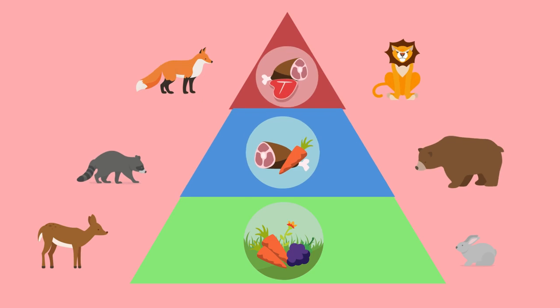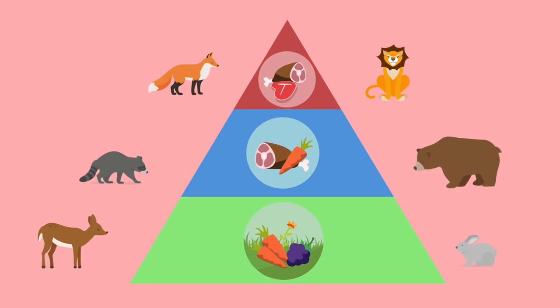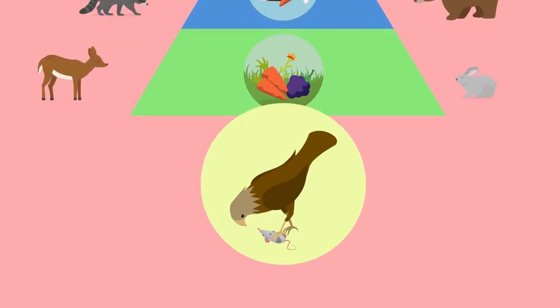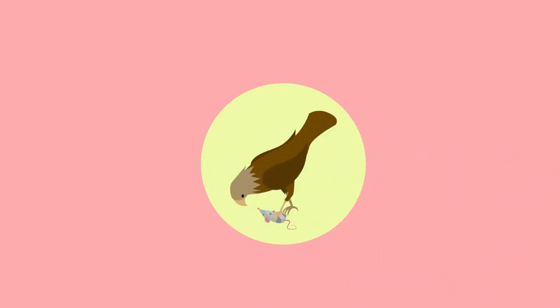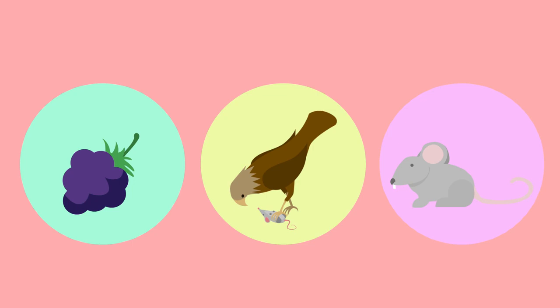Each of these trophic levels interacts with the others either directly or indirectly. A direct interaction between trophic levels usually takes the form of one organism consuming another, such as when hawks eat mice. An indirect interaction can be a bit harder to see, but often occurs when there is an intermediate step involved between two trophic levels interacting. For example, berries frequently consumed by mice are able to grow better as a result of hawks eating those mice — the hawk aids the berries' growth by consuming the mice that eat them.